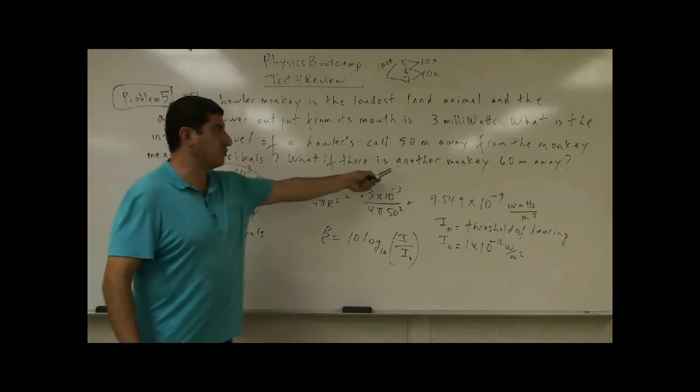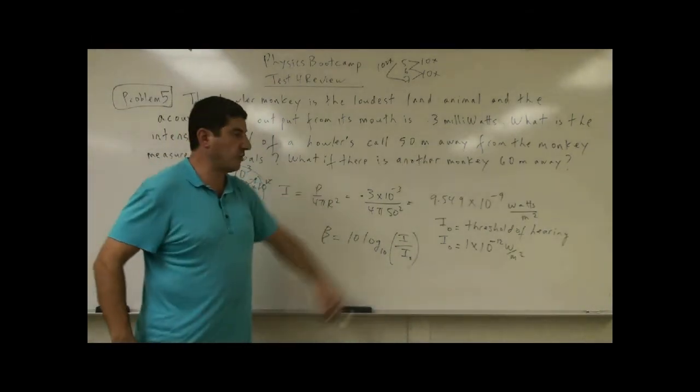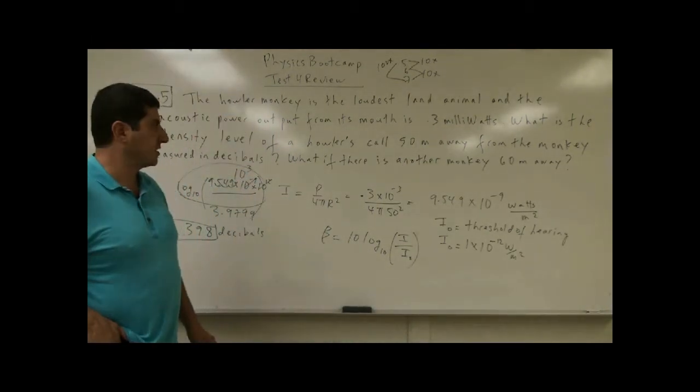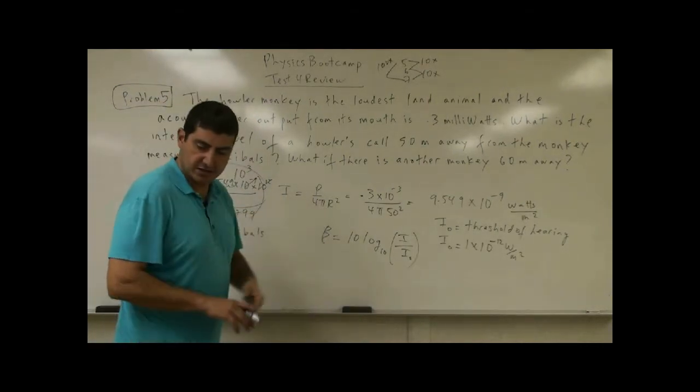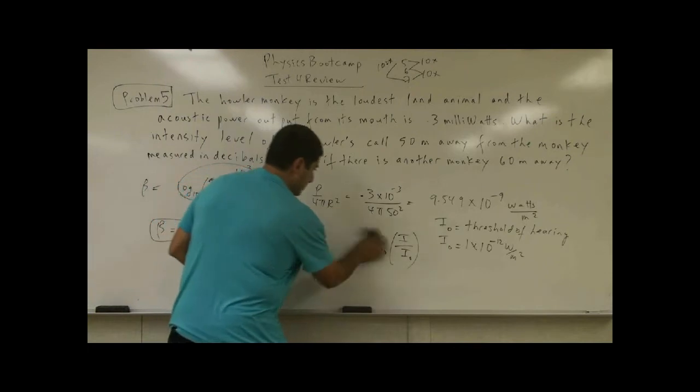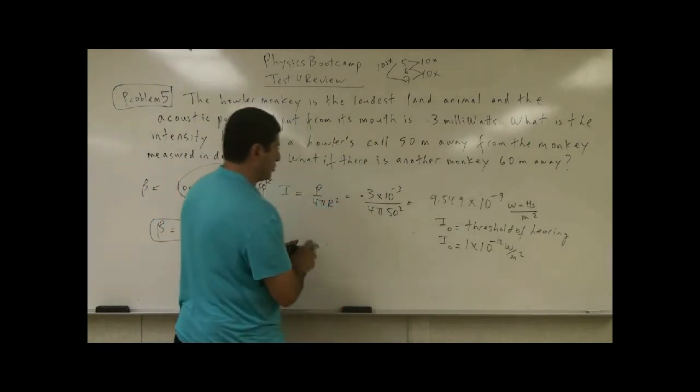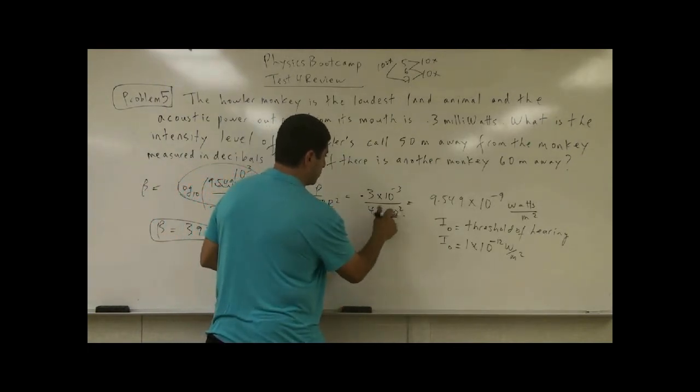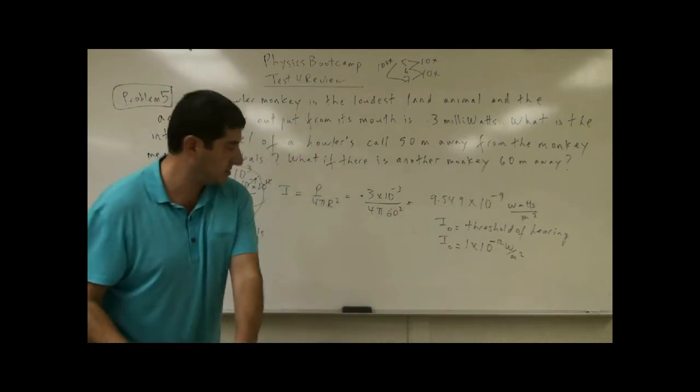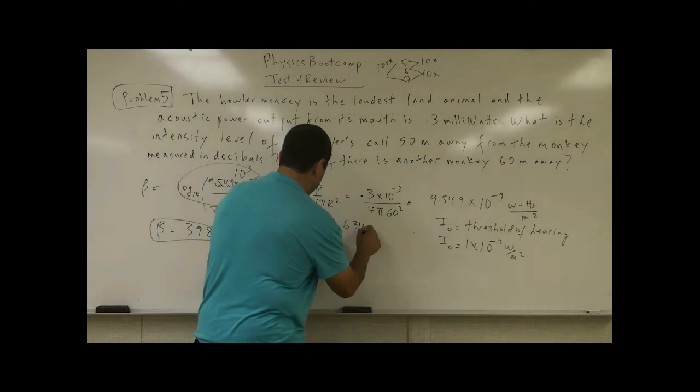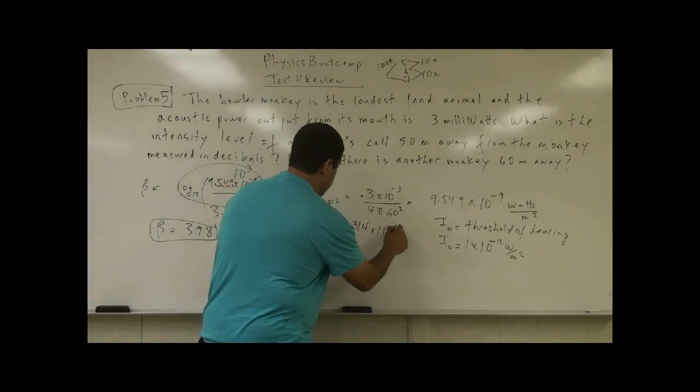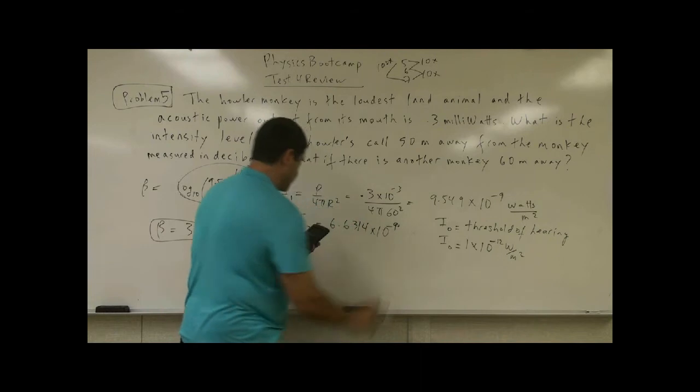So now, what's going to happen now? If there's another monkey 60 meters away, what do I have to do? Well, I'm going to have to do a similar process, except I'm going to have to put 60 squared here. Then what am I going to get? I'm going to get 6.6314 times 10 to the negative 9.